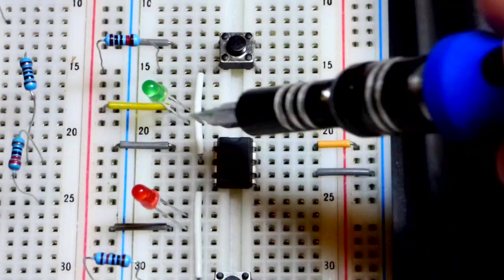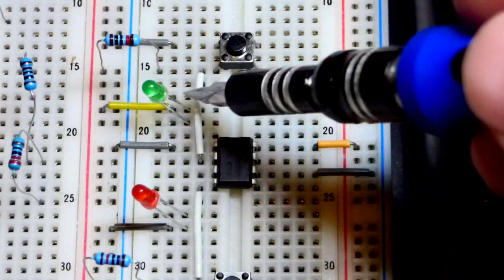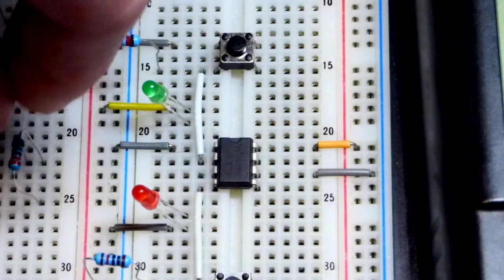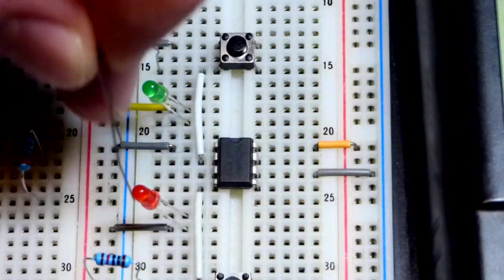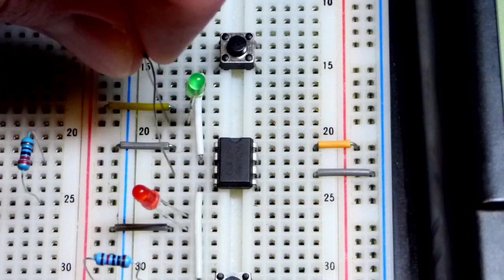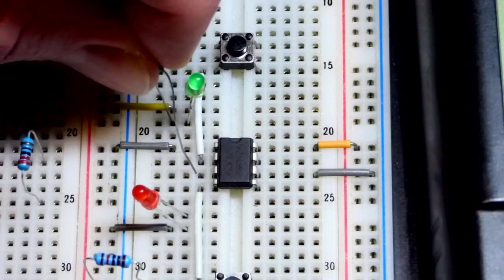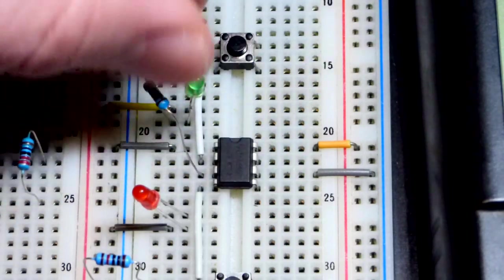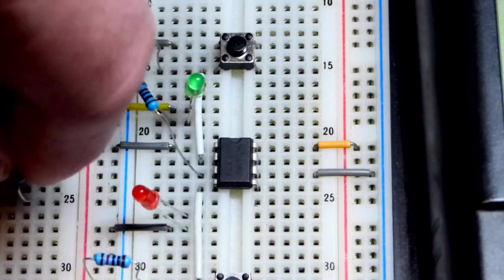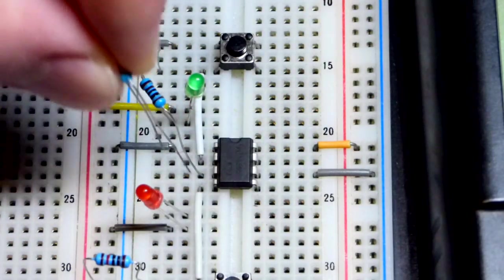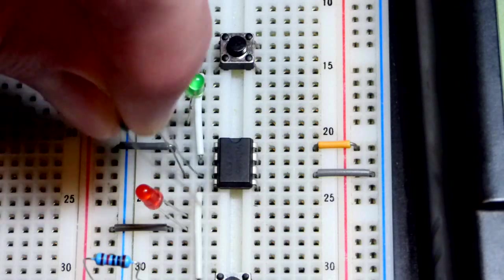The green LED up here, the anode is to the positive supply, short lead the cathode down here. That's the longer lead up there if you have not trimmed them. We're going to put a one kilo ohm resistor from the LED to the output, pin number three right there.